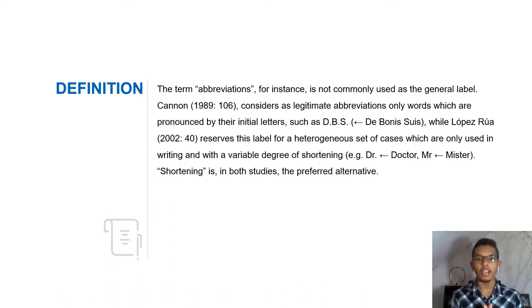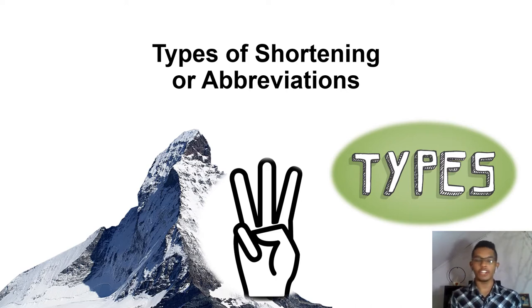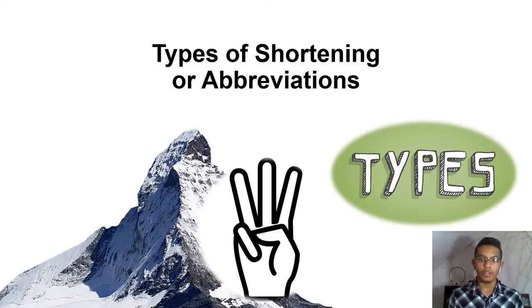So we are going to see more about it. We have three types of shortening or abbreviation, and we are going to speak about them.